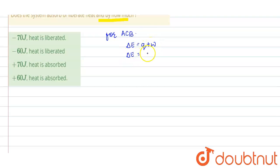So it will be equals to minus 50 joules for path ACB. For path ADB we will apply similar formula. Since it is a cyclic process, the internal energy will remain same.